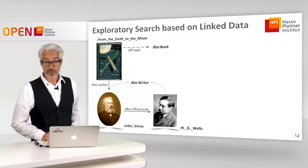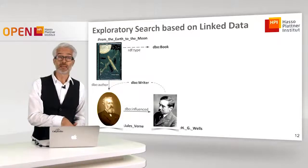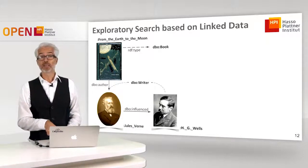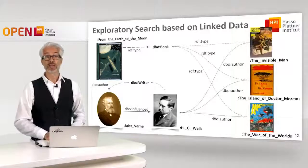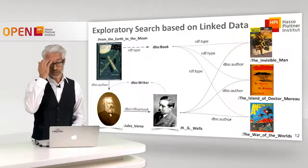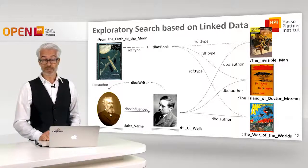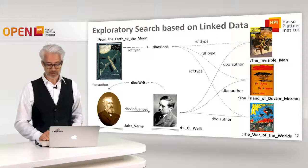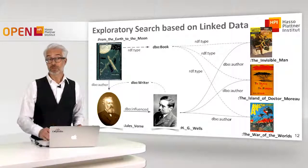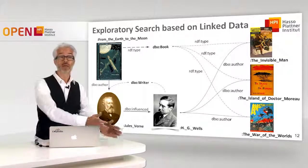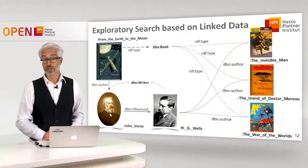Going one step further: I look at the author of my original book, then at other authors influenced by that author, then at what kinds of books those authors wrote — filtering for books. This gives recommendations like The Invisible Man by H.G. Wells, The Island of Dr. Moreau, or The War of the Worlds. These are strategies ranging from direct links to length-2 and length-3 hits or recommendations.